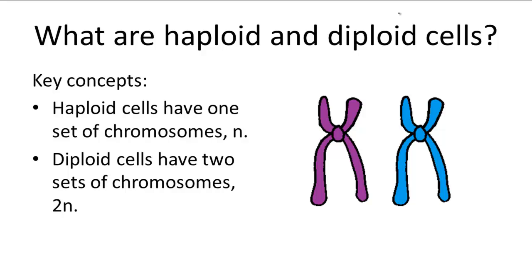The terms haploid and diploid refer to the chromosome count within a cell. A haploid cell will have one set of chromosomes, whereas a diploid cell will have two sets of chromosomes, commonly denoted as N for haploid and 2N for diploid.